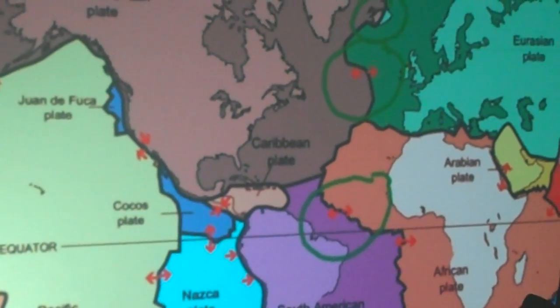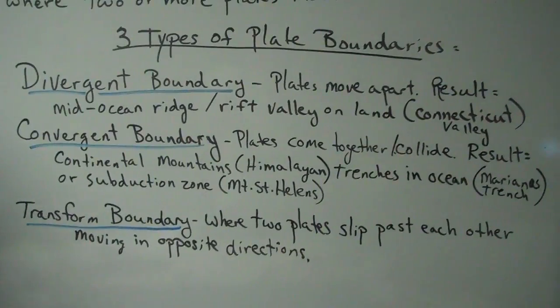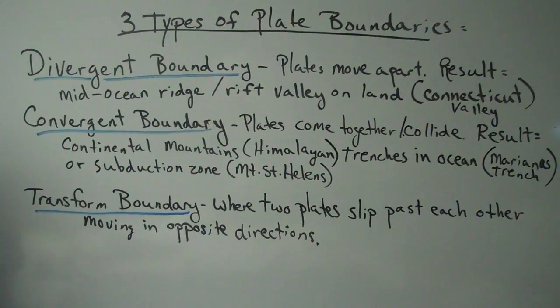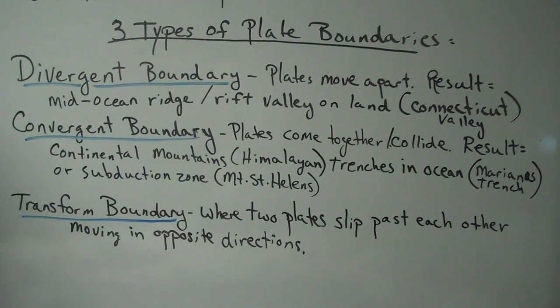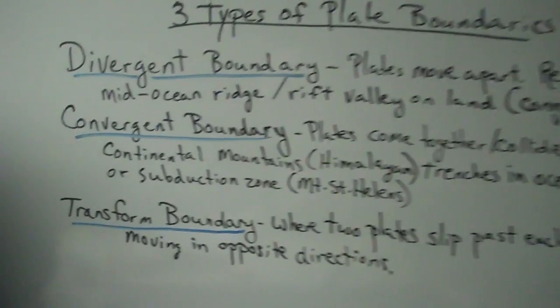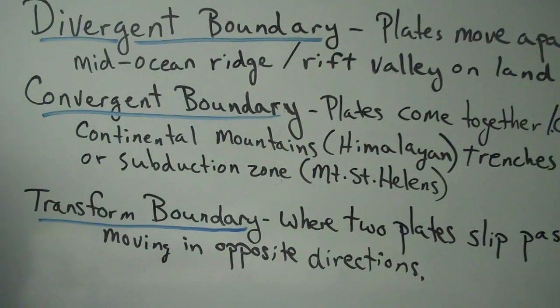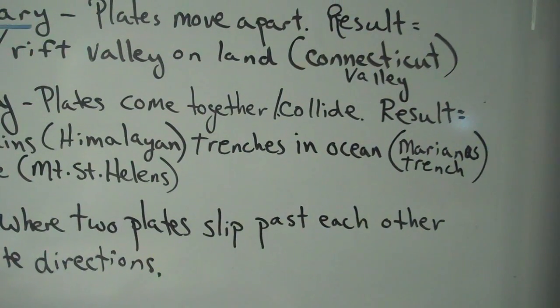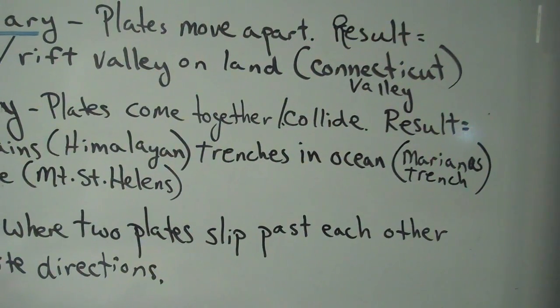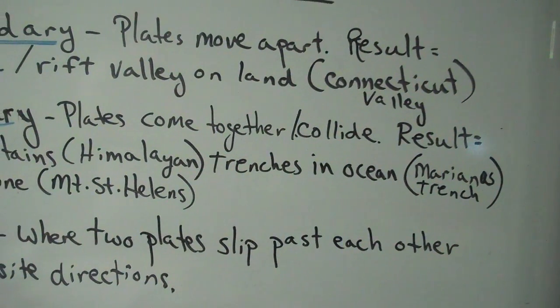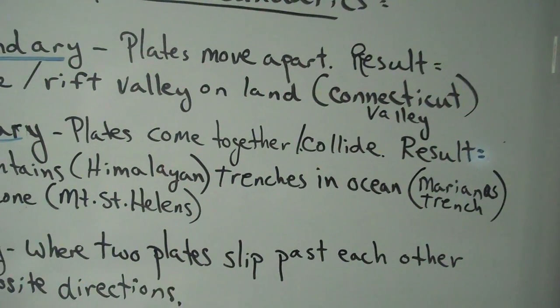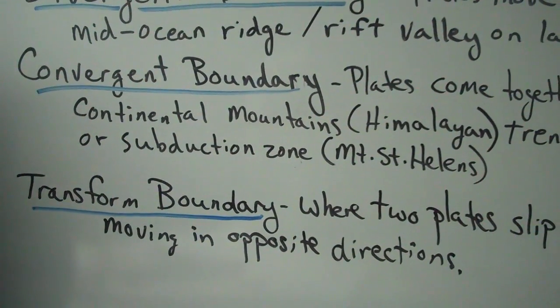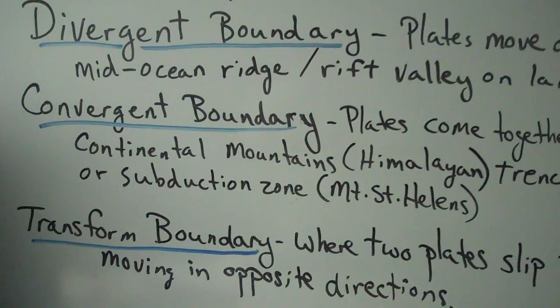Another type is a convergent plate boundary — when things converge, they come together. We actually have three different types of convergent plate boundaries, and it depends on the type of crust. If it's continental crust colliding, it forms mountains — the Himalayan mountains are formed in this manner. If it's two oceanic crusts coming together, they form trenches like the Mariana Trench. The older oceanic crust is more dense and will go underneath the younger oceanic crust. Then when oceanic crust comes into contact with continental crust, this creates something called a subduction zone.